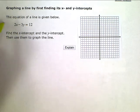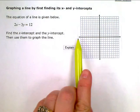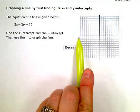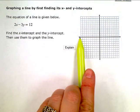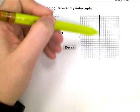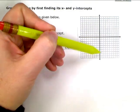To find the intercepts, we use the fact that any point on the x-axis has a y-value of zero. Any point on the y-axis has an x-value of zero.